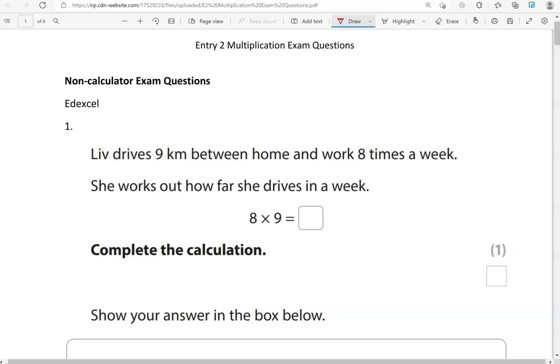Here is the first question. Liv drives 9 kilometers between home and work 8 times a week. She works out how far she drives in a week. 8 times 9 equals... What's that number? Complete the calculation. Show your answer in the box below.